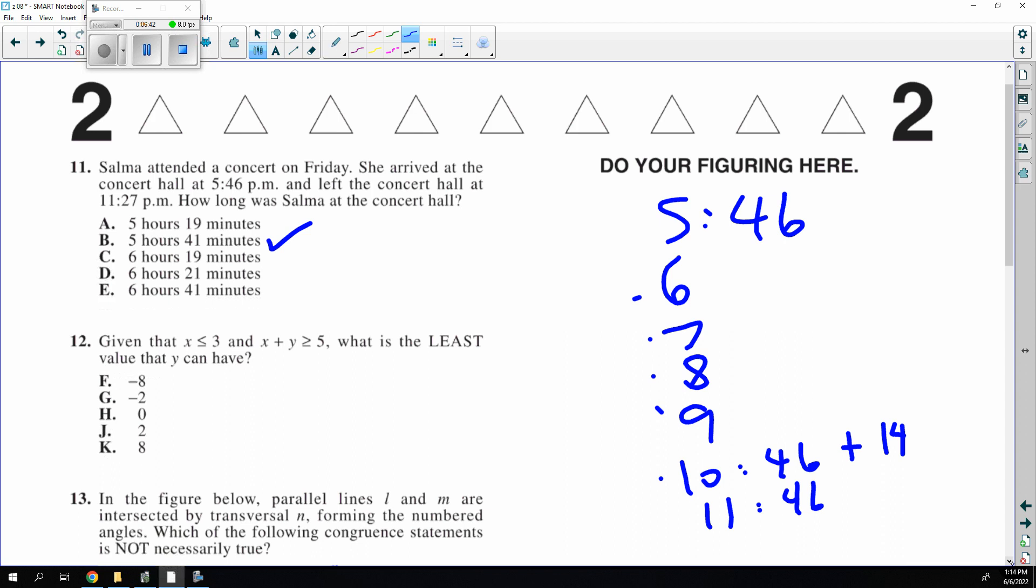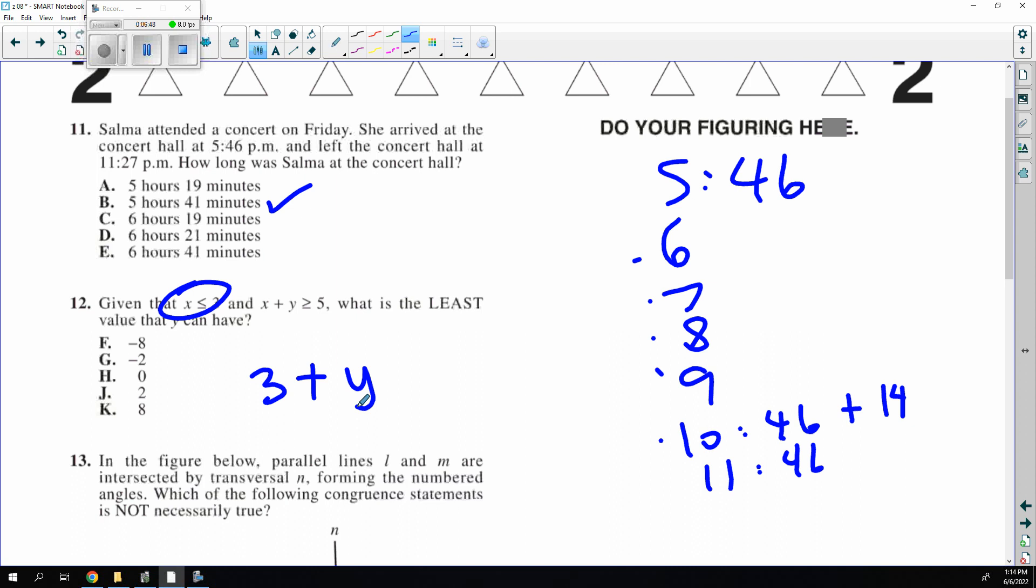I want the least Y, so I want the greatest X. So the greatest X can be is 3, which means Y has to be 2 or more. So the answer is 2, J.